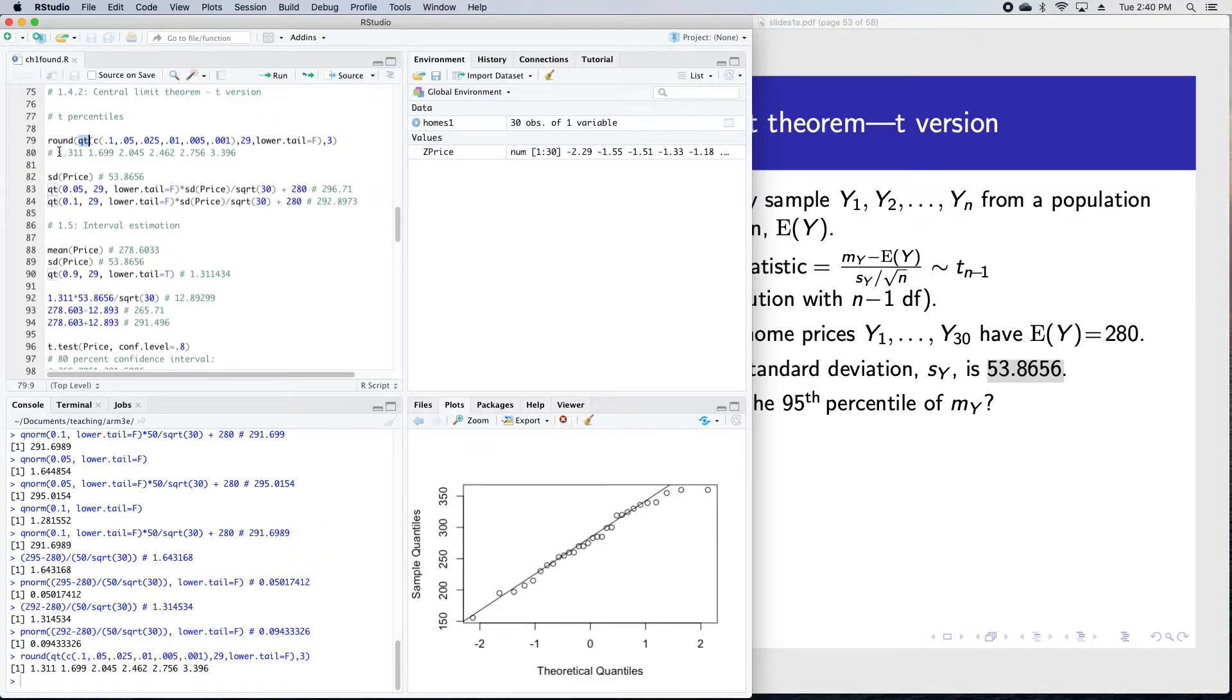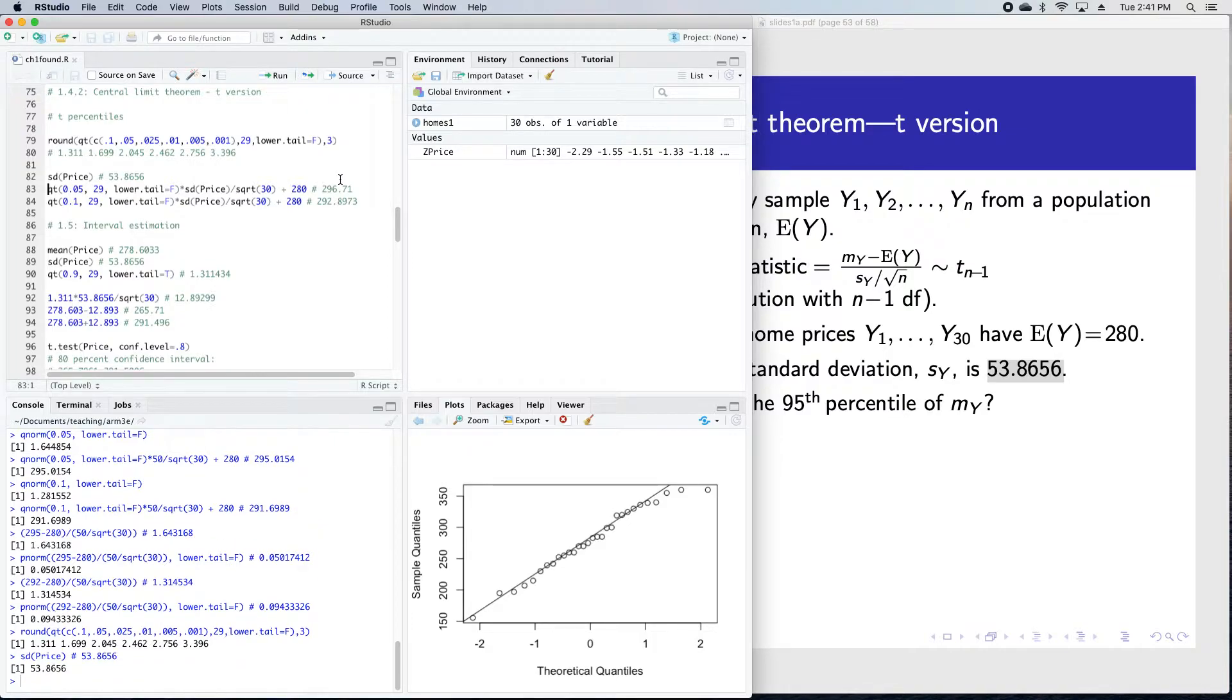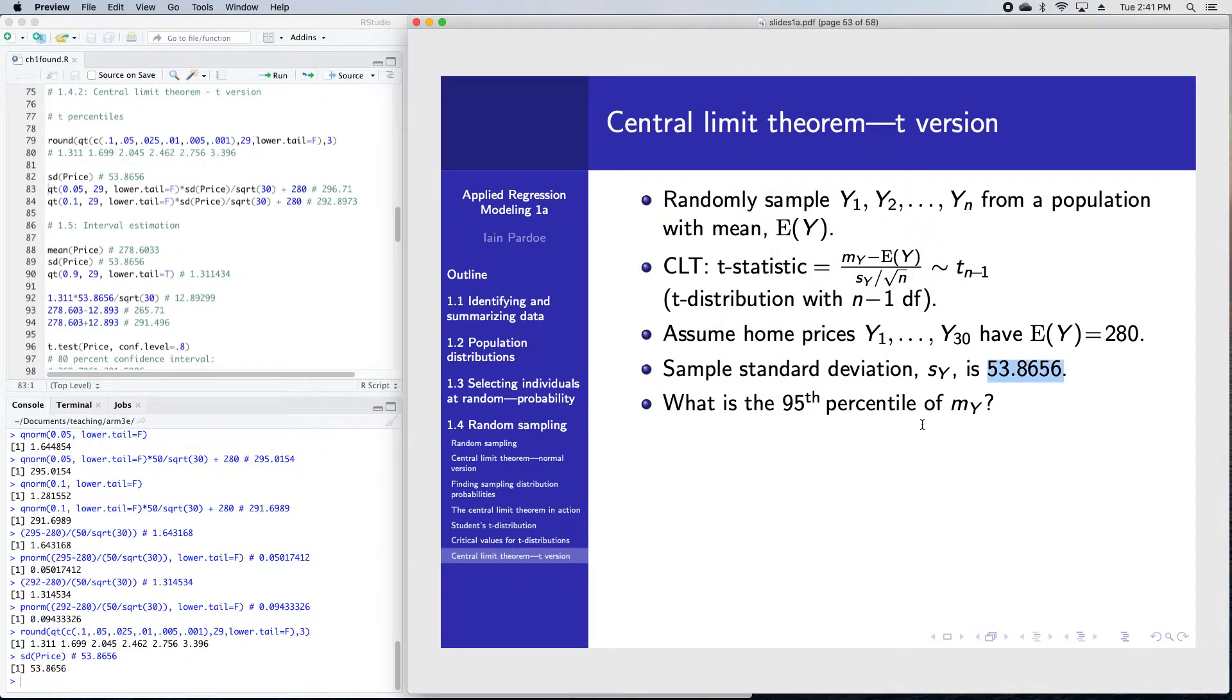These numbers were from that row in the table for 29 degrees of freedom. Here's the calculation of the sample standard deviation, 53.8656. Then the question is, what is the 95th percentile of the sample mean?